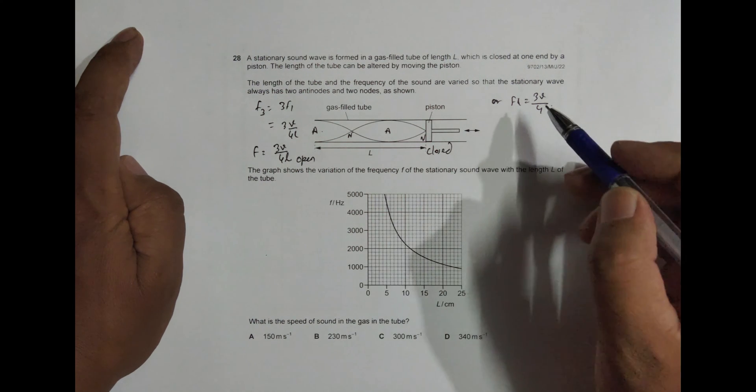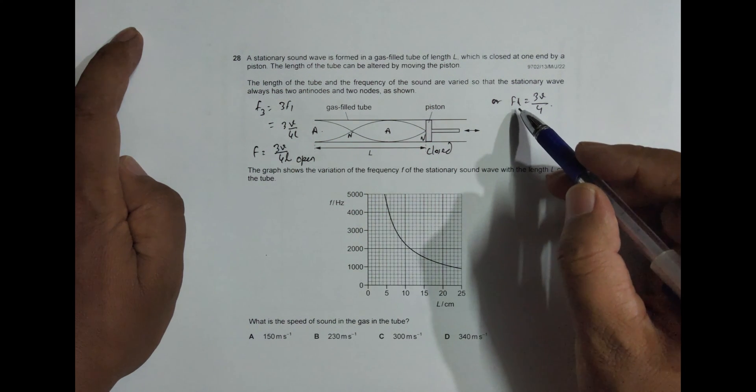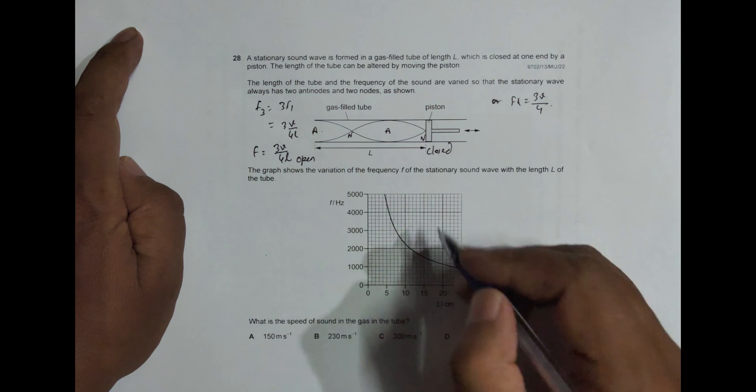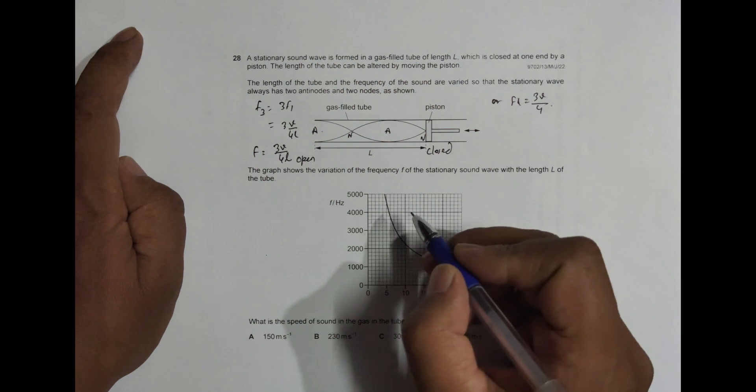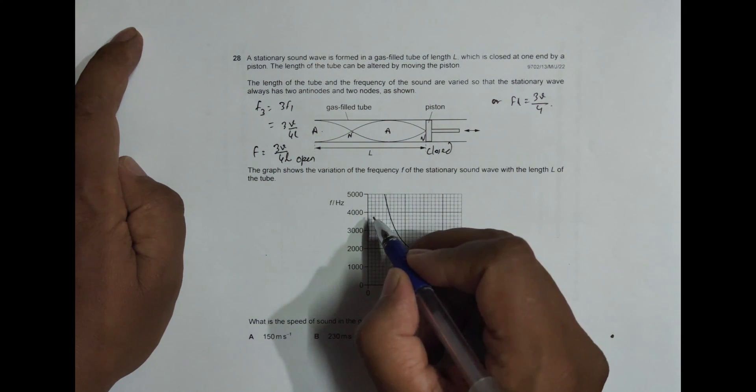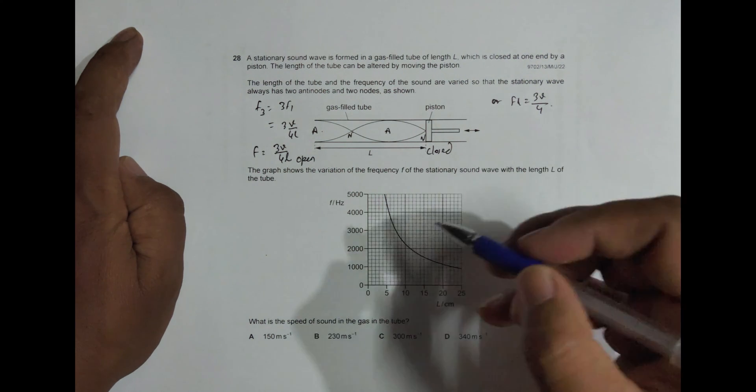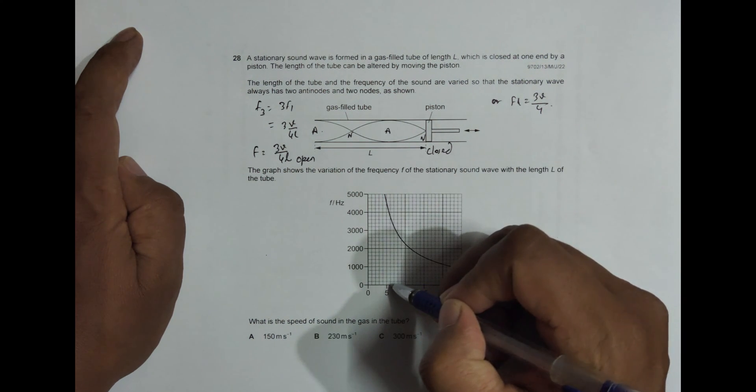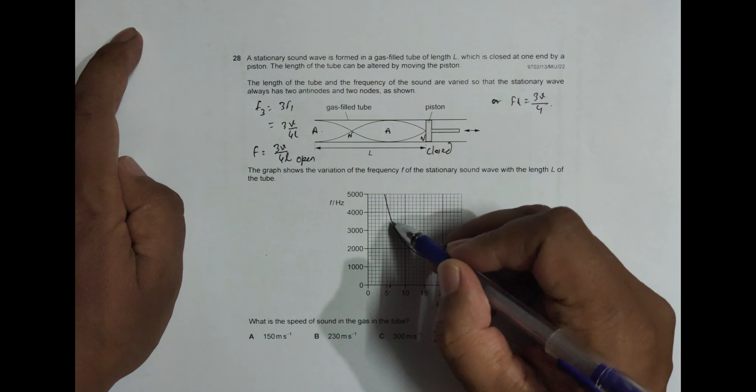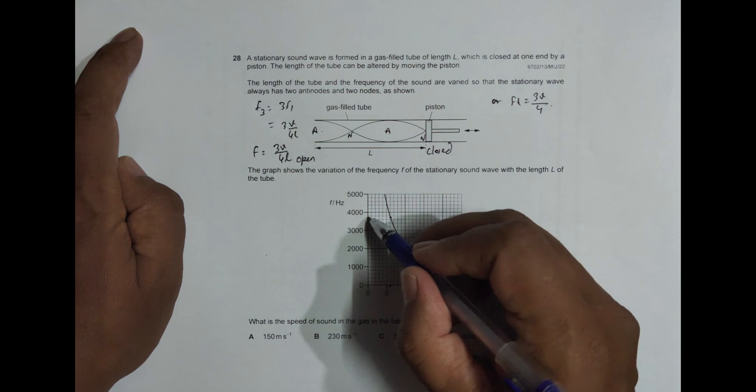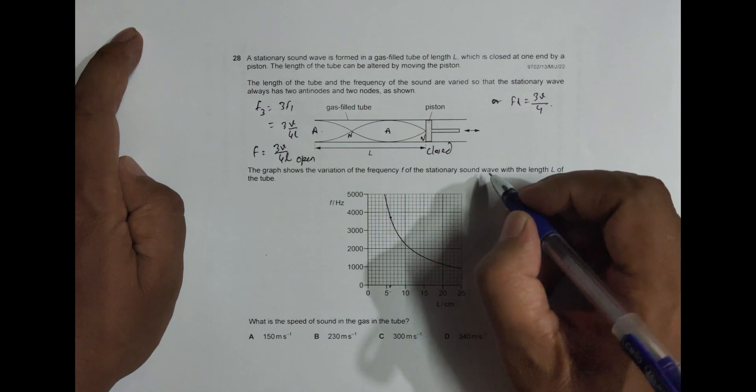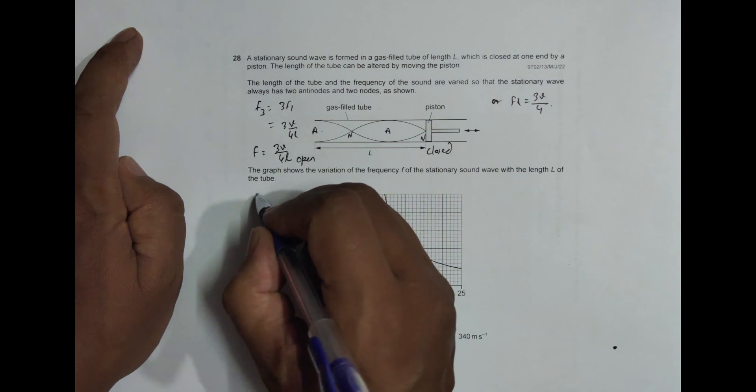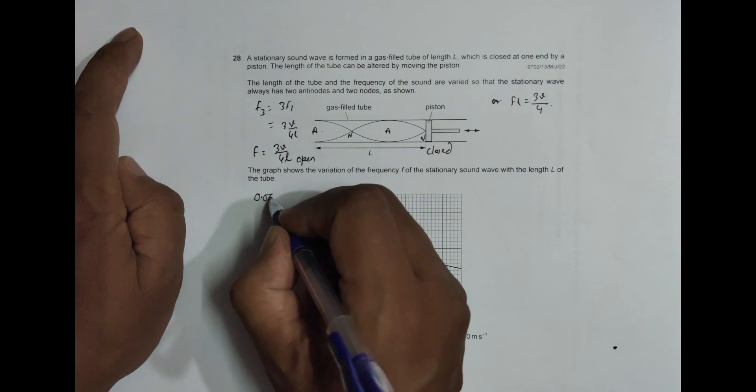Now our job is to calculate the value of FL. So let us take a pair of data here. So if I take this thing here, this is 6 cm from here. So if I take this as 6, that's 0.06 meter.